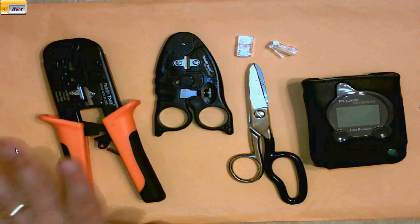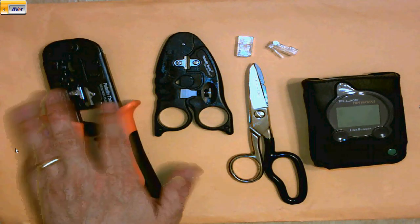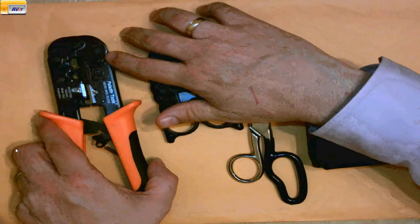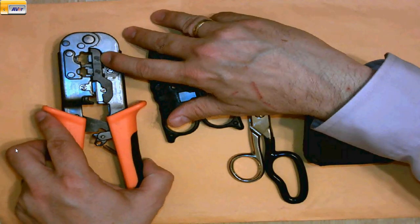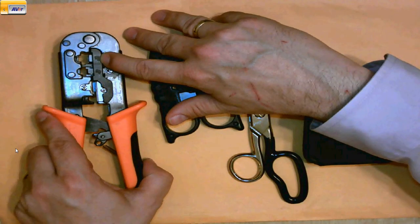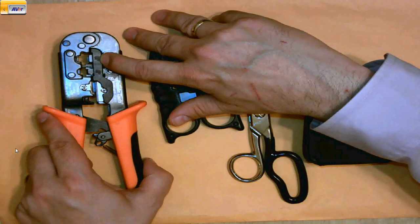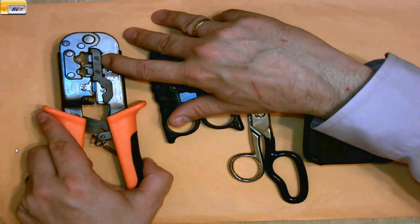Let's introduce our tools. First off we have our crimper. This is a multi-function crimper. It has an 8 position crimp. That's the one we'll be using today and throughout this class. Eight positions because Ethernet has 8 wires.